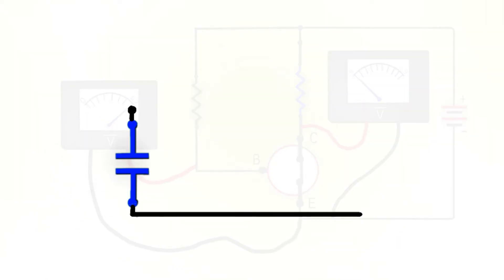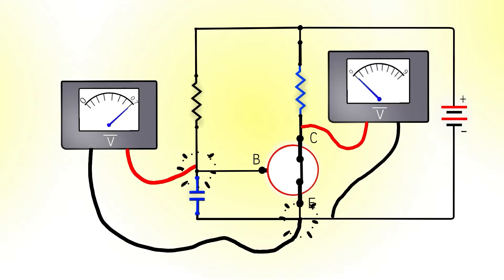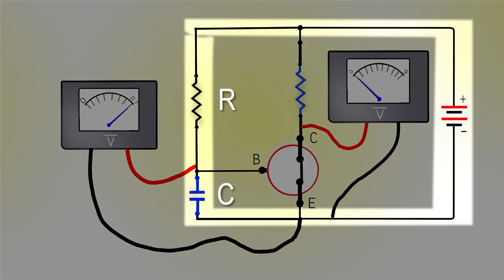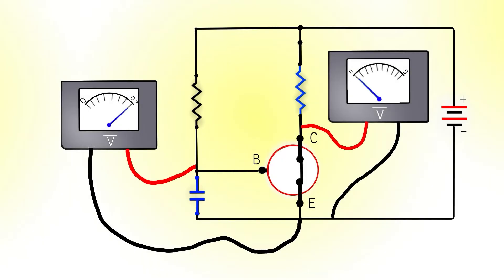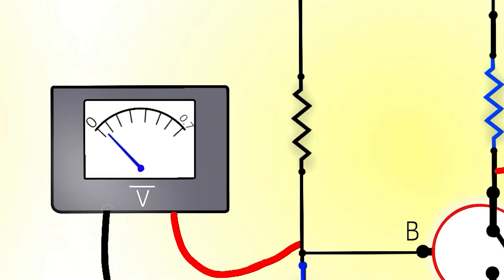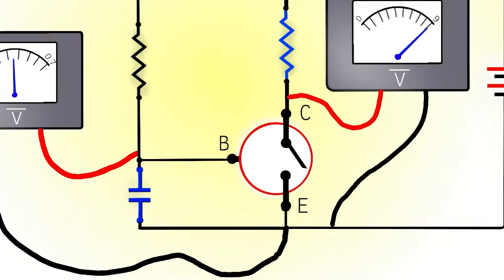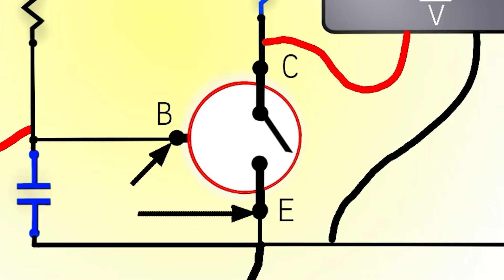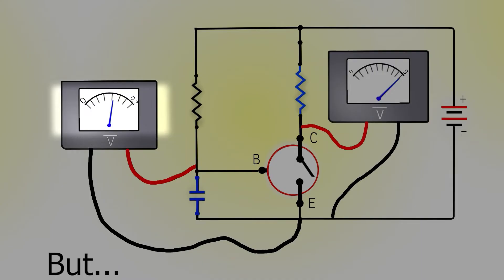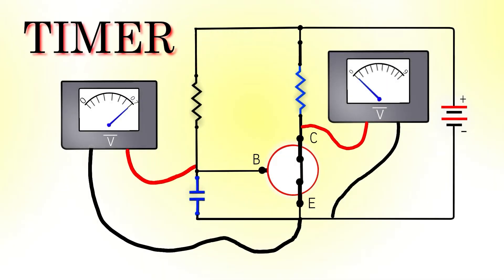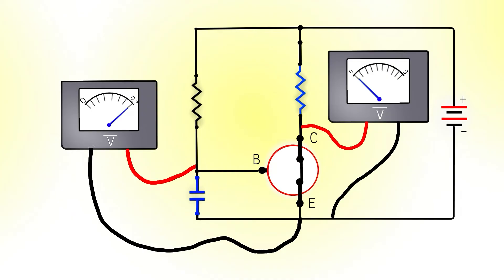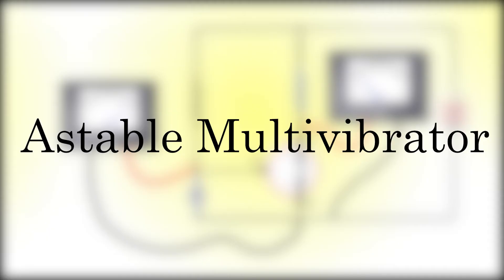Now we can combine the capacitor and transistor. Let's connect the capacitor in the circuit — you can notice it forms an RC circuit as previously discussed. The transistor immediately turns off after the capacitor is connected, because voltage across the capacitor slowly increases from 0V, and the transistor needs about 0.7V between base and emitter to turn on. But as the capacitor charges and voltage reaches 0.7V, the transistor turns on. That's how a simple timer can be made. Now that we have learnt the fundamentals, let's jump to the astable multivibrator circuit.